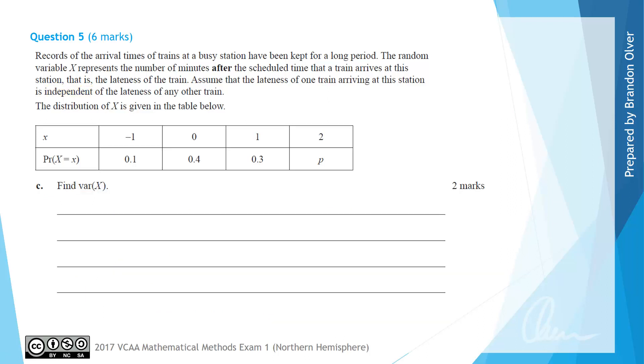For part C we're asked to find the variance of X. So from the formula sheet we know that the variance of X is equal to the expected value of when X is squared minus the mean squared. And the mean was what we just found in part B of this question.